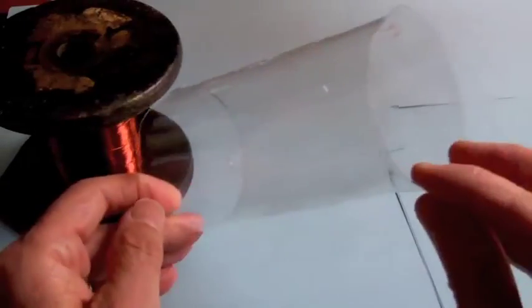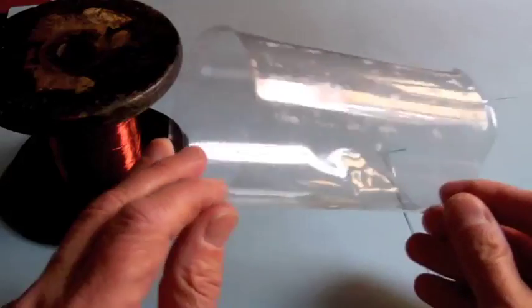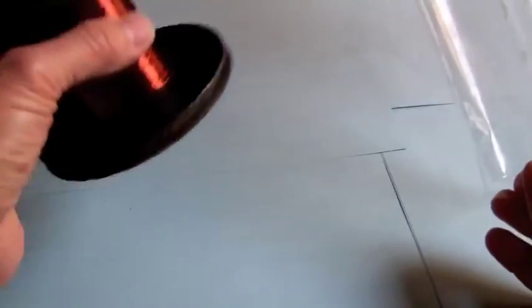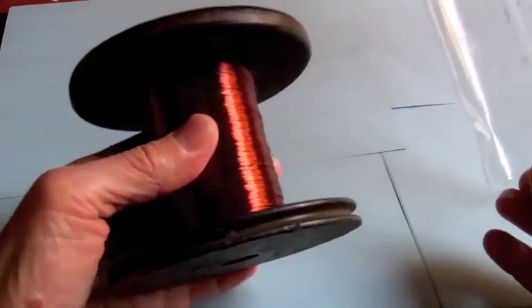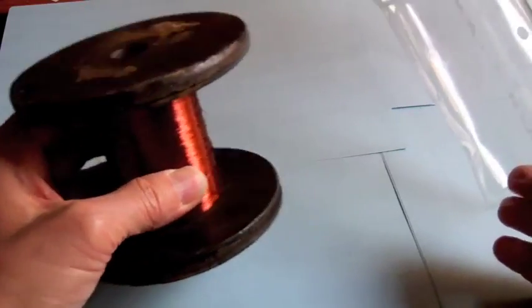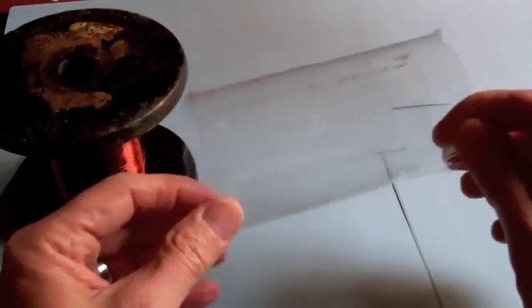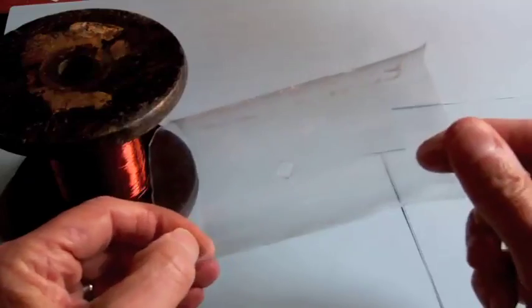I took a plastic bottle and cut the ends off to form this plastic tube. And I have some 32 gauge magnet wire here and I'm going to take the magnet wire and wind it about 500 times around this plastic tube.